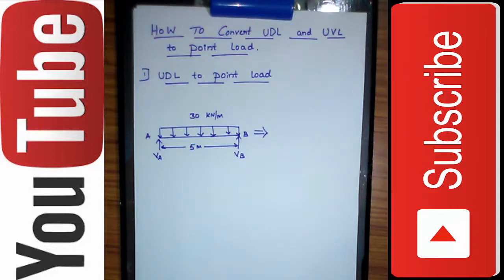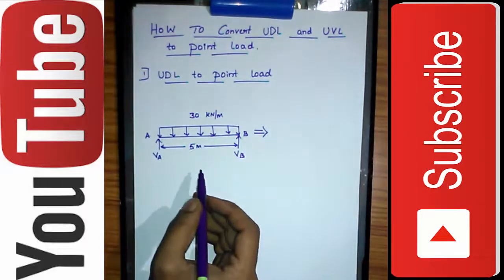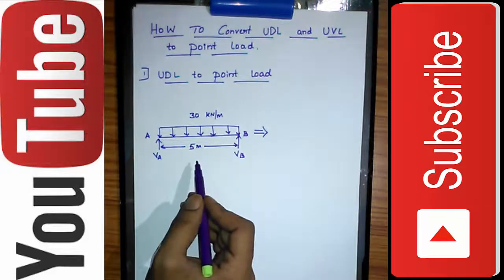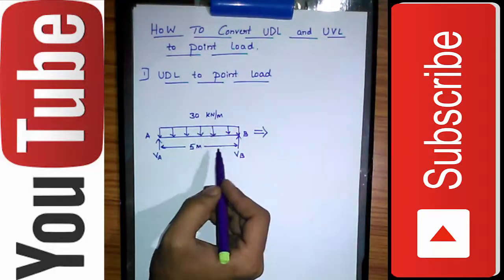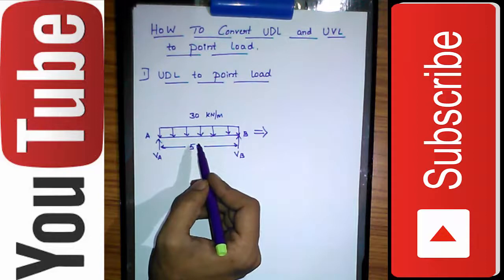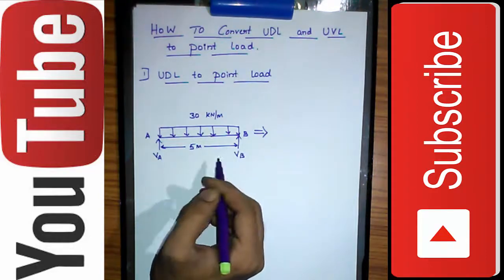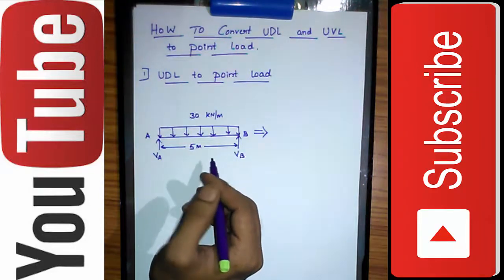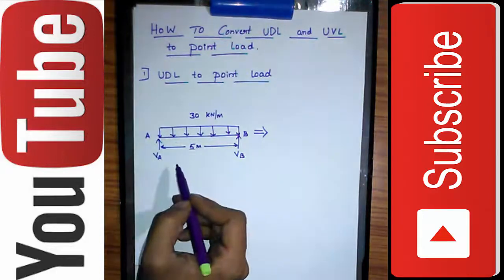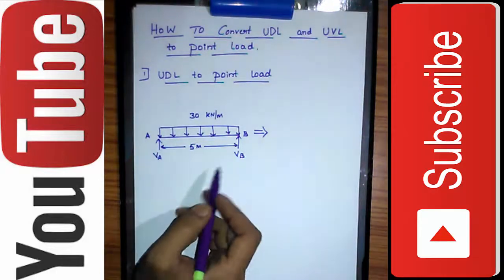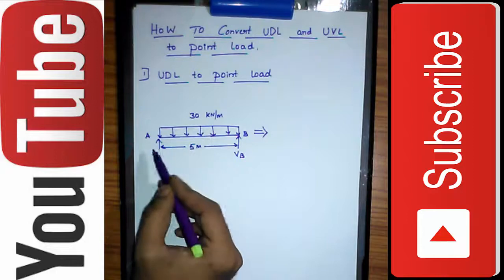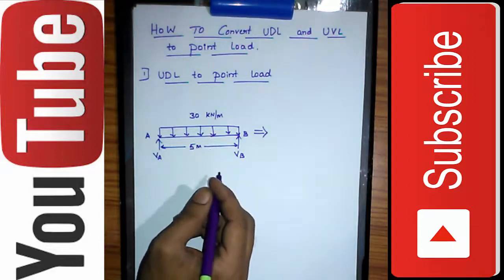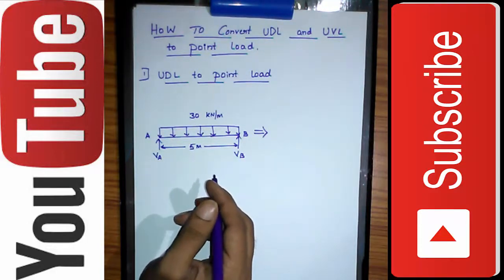We will consider the first case: UDL to point load. We have a 5-meter span with a 30 kN per meter intensity of UDL acting throughout the beam for 5 meters. We have vertical forces VA and VB at supports A and B.